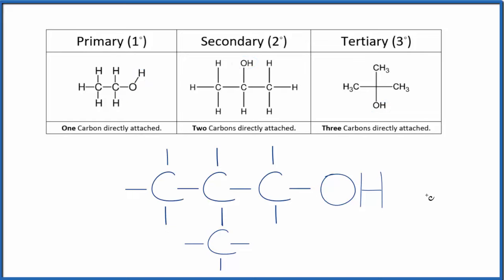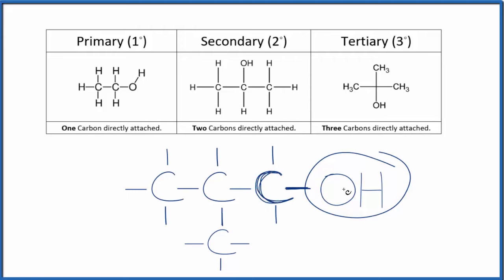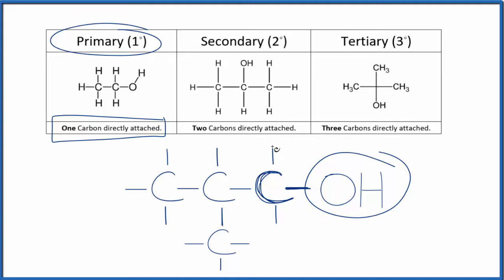Let's look at an example. We find the OH group right here, and we can see this bond — it's bonded to just one carbon atom. So there's one carbon directly attached, and that's a primary alcohol. Note these lines right here go to hydrogen atoms, so we kind of ignore them.